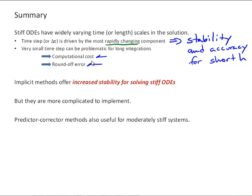They require setting up a system of algebraic equations, and then using one of the other methods that we've covered in this class to solve that system. We can use the predictor-corrector approach to get around that requirement, that difficulty for the implicit method, but they're only going to be useful for moderately stiff systems. But they are generally a bit more stable.